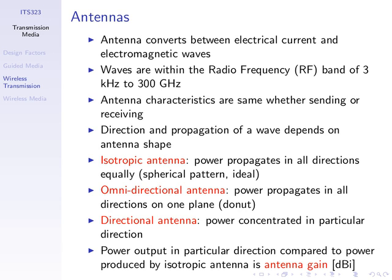Omnidirectional antennas are useful if you want to cover a particular flat area like a floor or a room. You don't care about covering up to the ceiling or the next floor. More generally, with a directional antenna — unlike omnidirectional which spreads power equally around one plane — we concentrate the power in a particular direction.